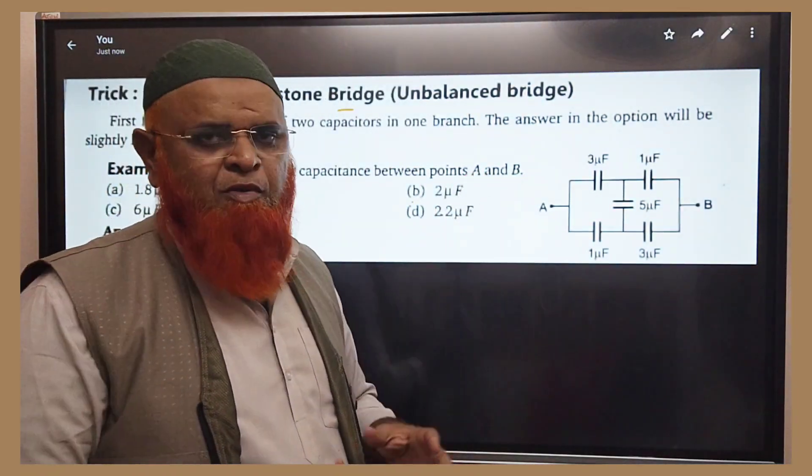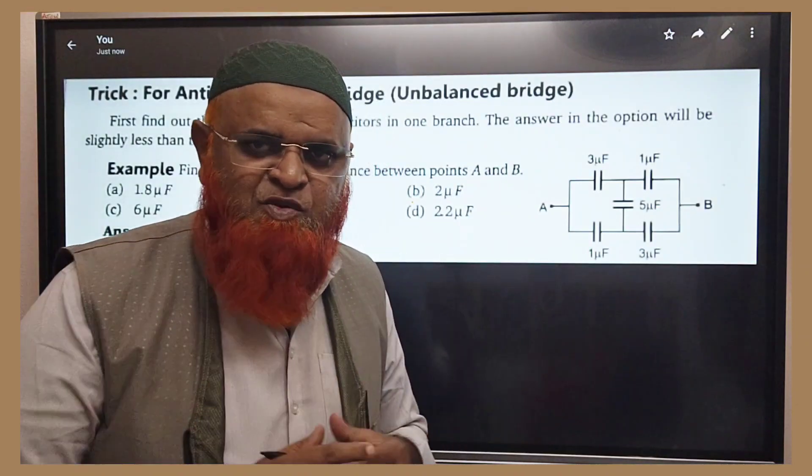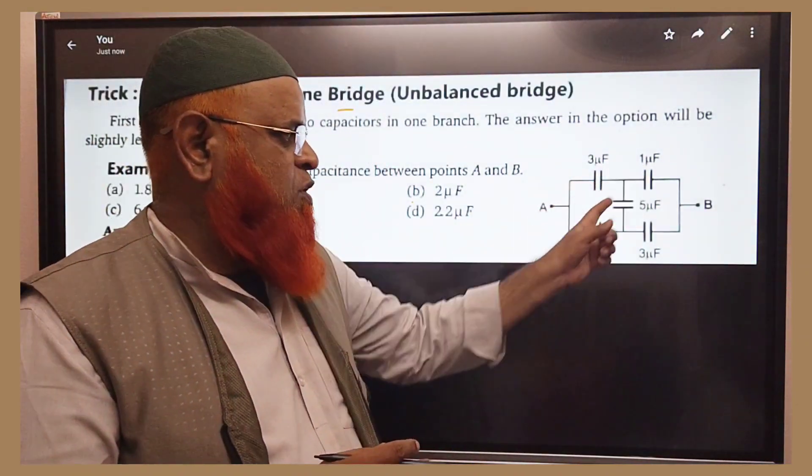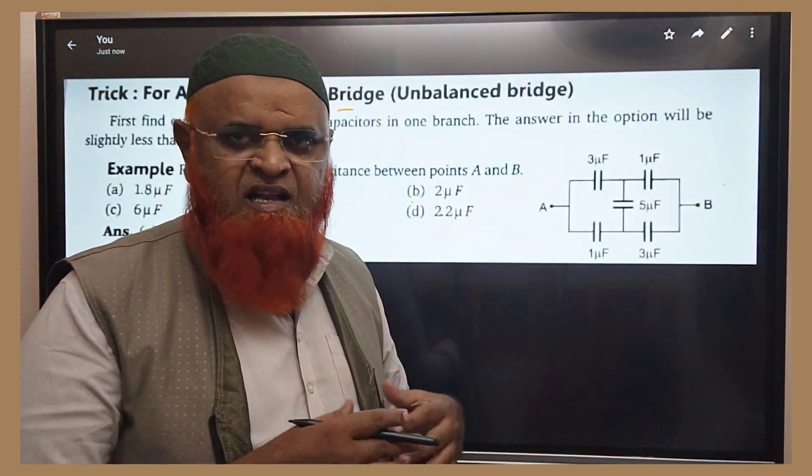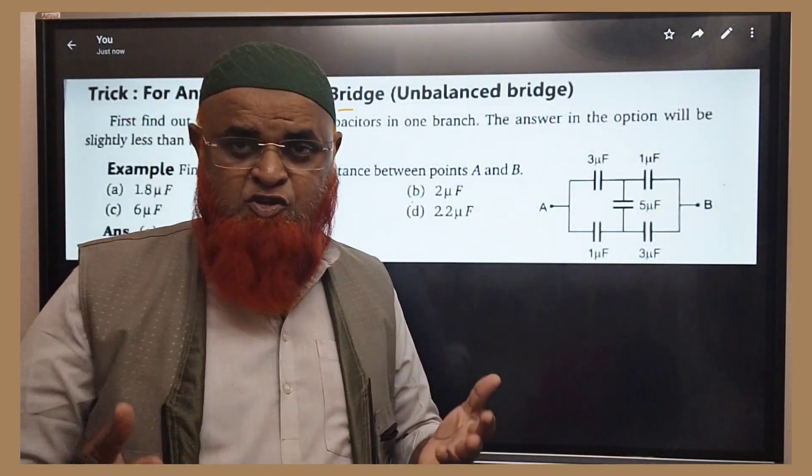My dear students, how are you going to solve the problem of unbalanced Wheatstone bridge? This is said to be an unbalanced Wheatstone bridge because it is 3, 1 and 1 and 3. So it is unsymmetrical. It's an unbalanced Wheatstone bridge. It's also called as anti-Wheatstone bridge.